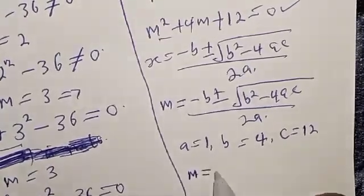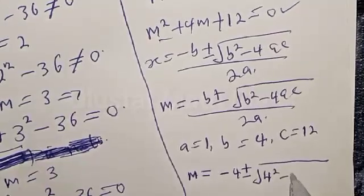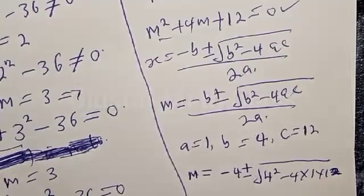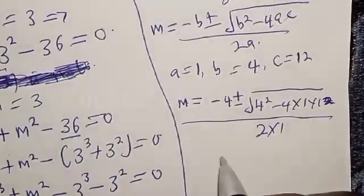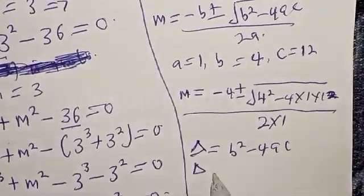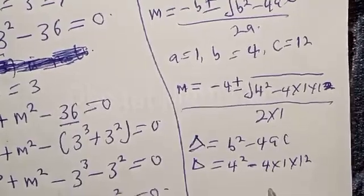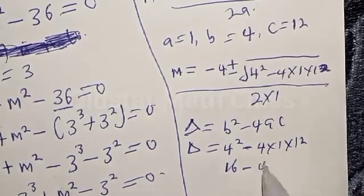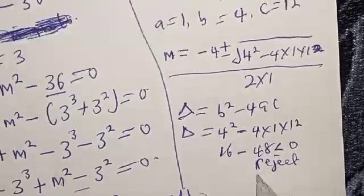Substituting: m equals negative 4 plus or minus square root of 4 squared minus 4 times 1 times 12, over 2 times 1. The discriminant equals 4 squared minus 4 times 1 times 12, which is 16 minus 48, giving a negative value. Since the discriminant is less than zero, we reject this case as there are no real roots.